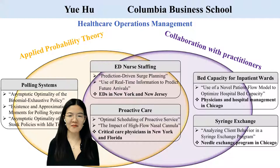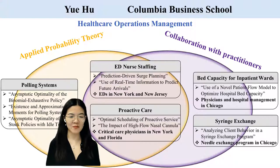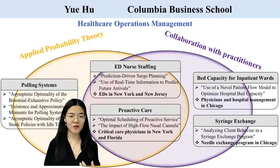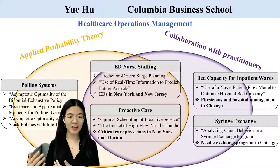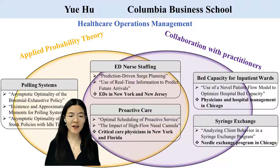Hi, everyone. My name is Yue. I'm a PhD candidate from Columbia Business School. My research utilizes tools from stochastic modeling, applied probability, and optimal control theory to design healthcare systems.